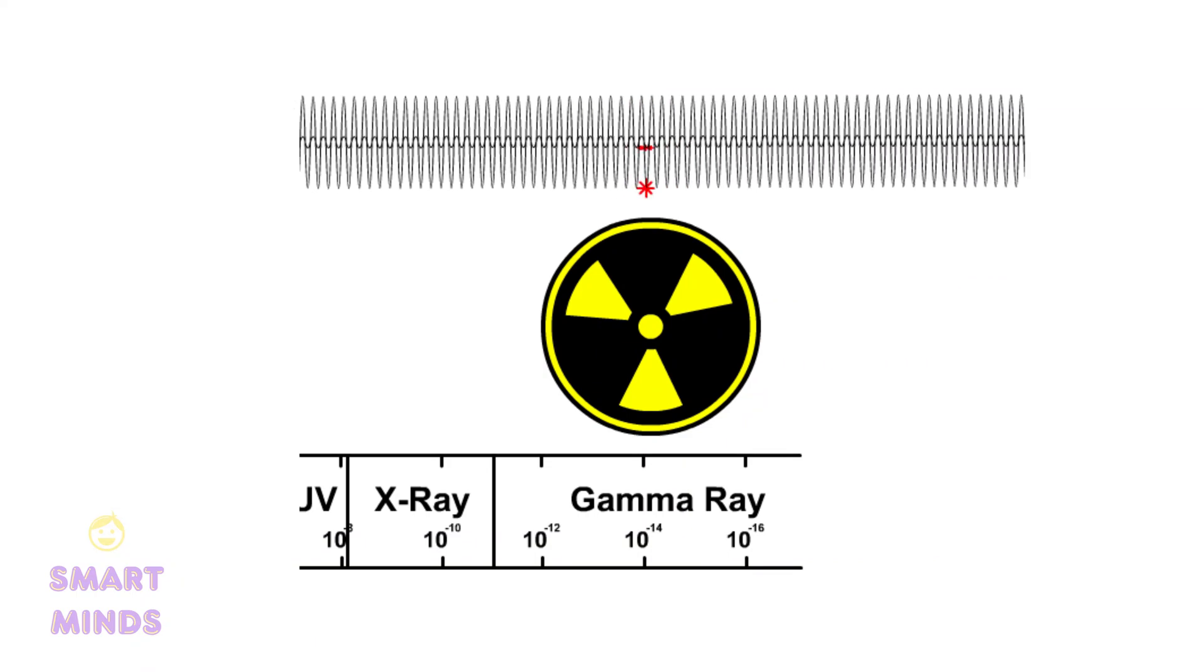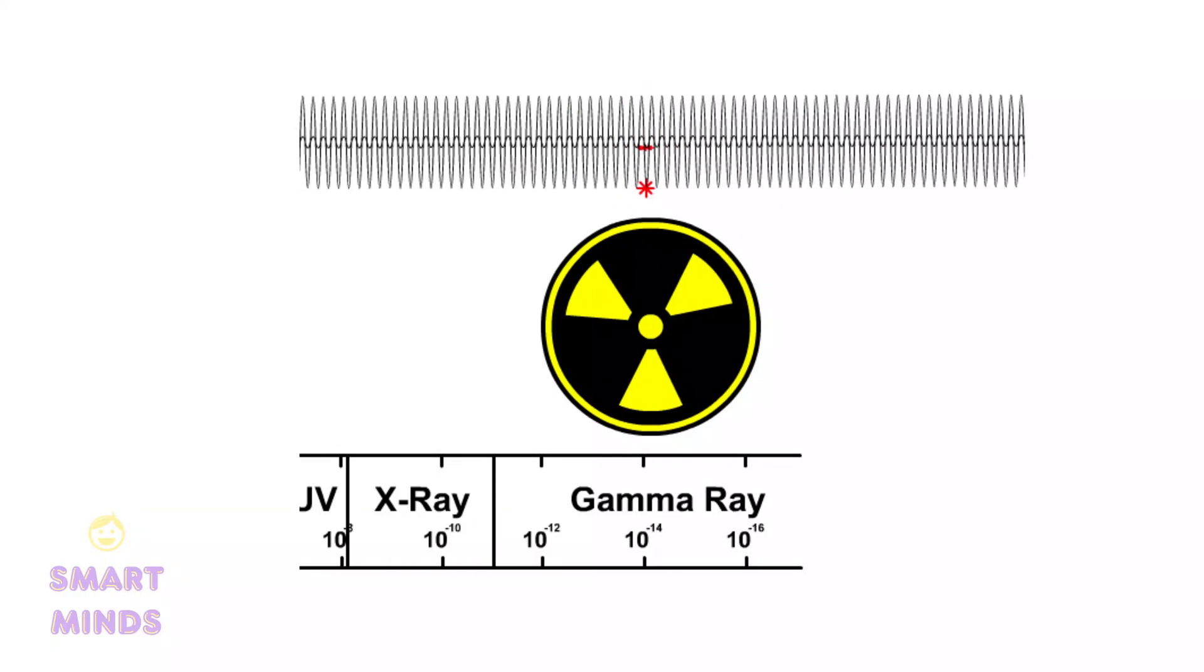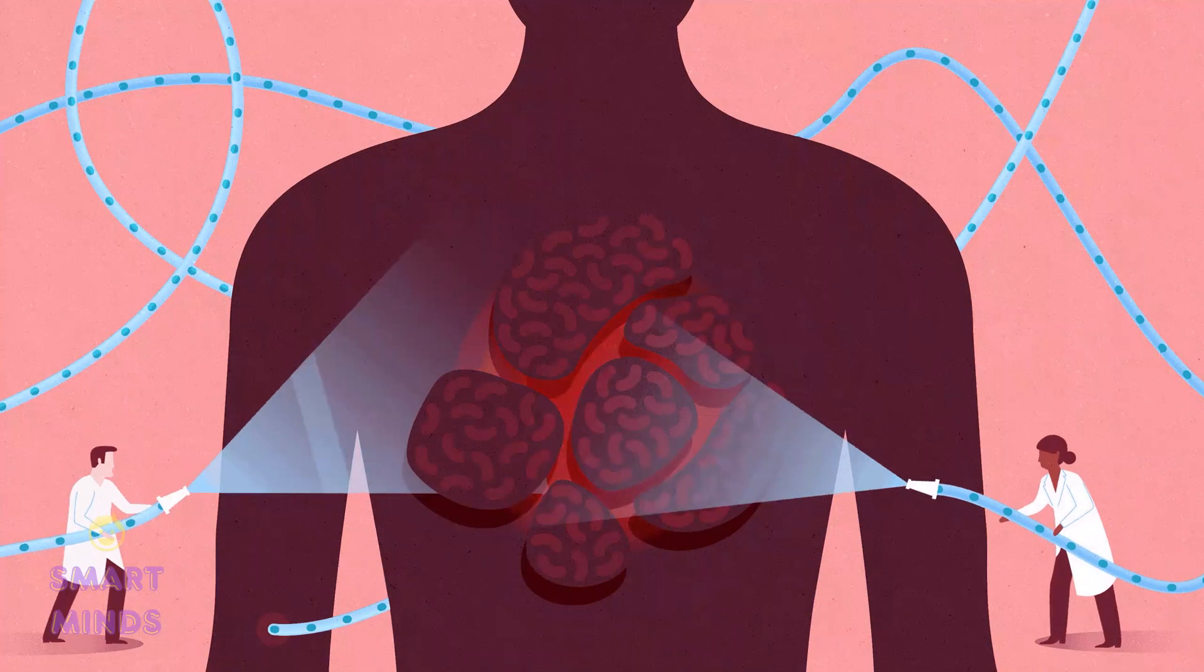Finally, gamma rays have the shortest wavelength and highest frequency of any type of electromagnetic radiation. They are produced by nuclear reactions and are used in radiation therapy to treat cancer.